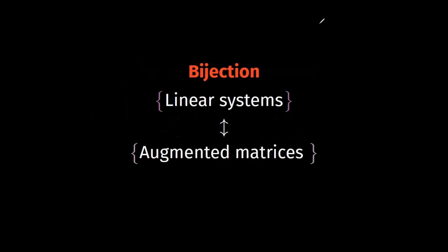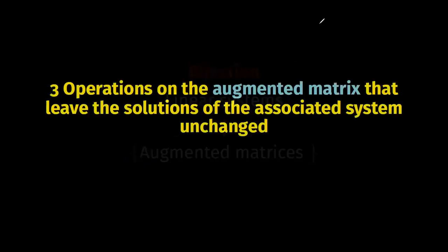In summary, we have a bijection between linear systems and augmented matrices. For this reason we can transport the three operations on the equations of a system — studied in the previous video — to the rows of a matrix. Remember, those three operations do not affect the solution of the system.